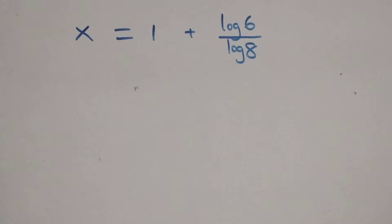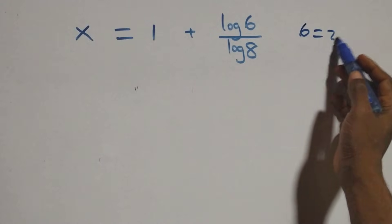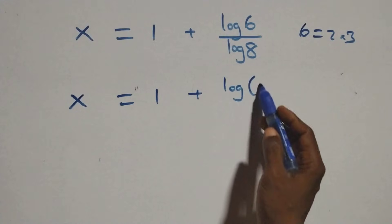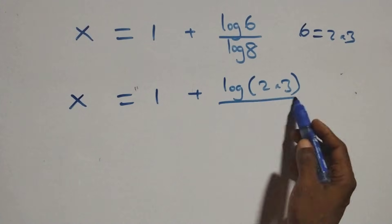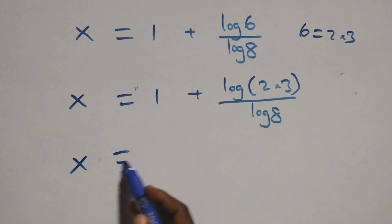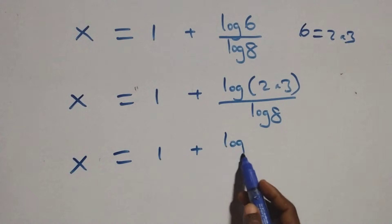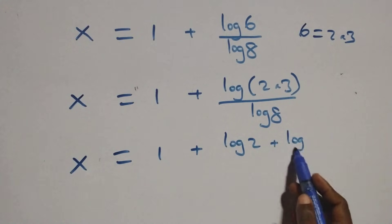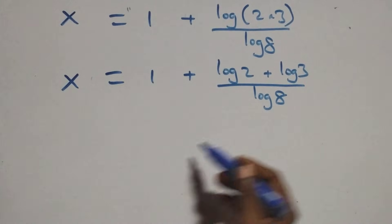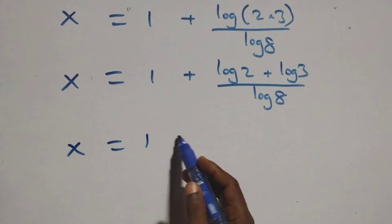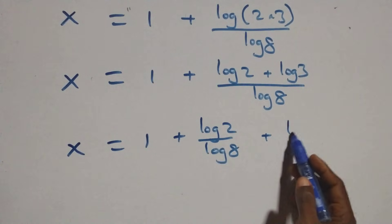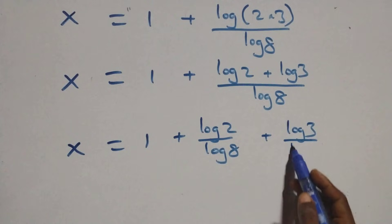At the next step, 6 can be written as 2 times 3. Then what we have becomes x equals to 1 plus log of 2 times 3 over log 8. This also follows the log product rule, so we can write x equals to 1 plus log 2 plus log 3 over log 8. We separate this into two fractions, and this becomes x equals to 1 plus log 2 over log 8 plus log 3 over log 8.